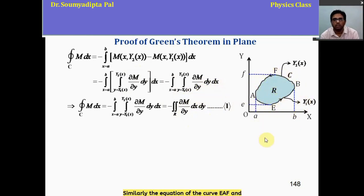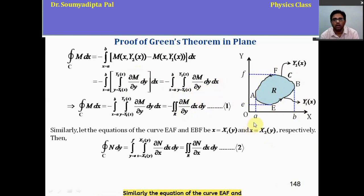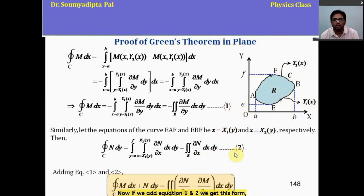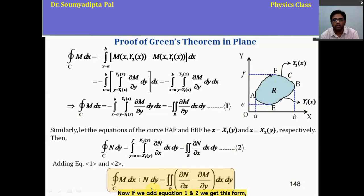Similarly, the equation of the curve EAF and EBF can be considered like this. Then, close line integration n dy can be written like this: double integration del n del x over this region. Now, if we add equation 1 and 2, we get this form, which is actually the mathematical form of Green's theorem. So, this is the proof of Green's theorem in plane.